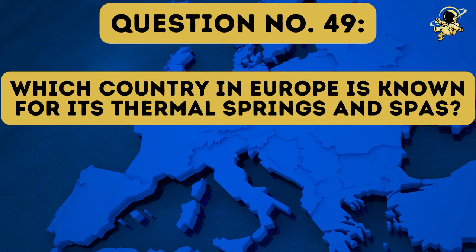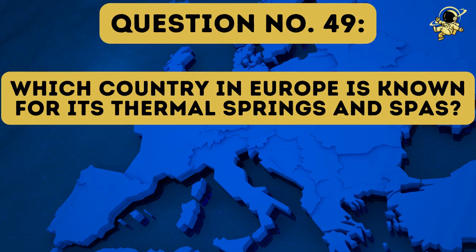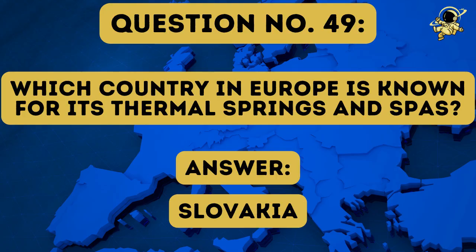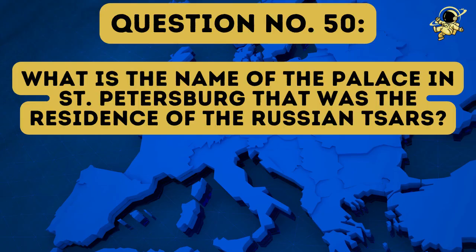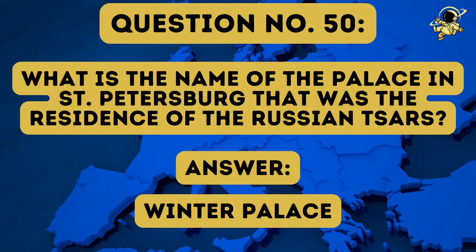Question number forty-nine: Which country in Europe is known for its thermal springs and spas? And the answer to question number forty-nine is Slovakia — this question was probably a bit more difficult than a lot of the others. Question number fifty: What is the name of the palace in St. Petersburg that was the residence of the Russian Tsars? And the answer to question number fifty is the Winter Palace.